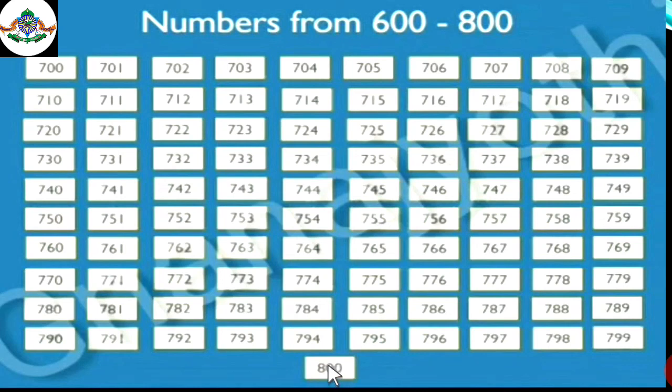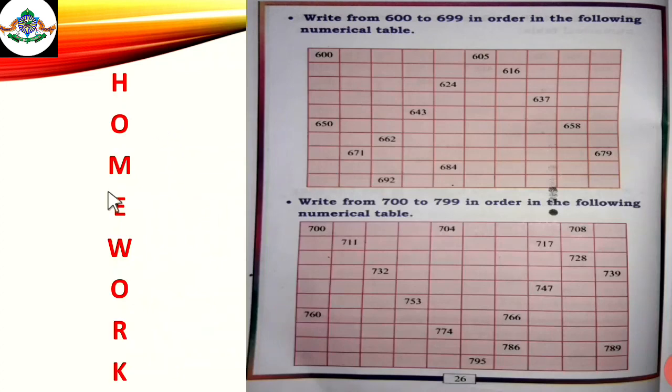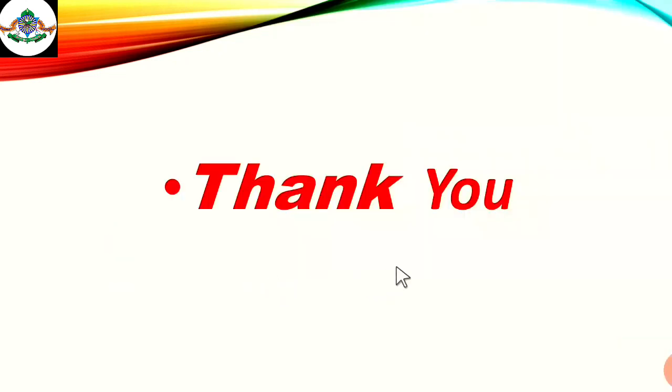OK students, till now we have learnt how to read and write the numbers from 600 to 800. I hope you have all understood. Children, your today's homework is in your textbook on page number 26. There is given tables. In the first table, you have to write the numbers from 600 to 699, and in the second table, you have to write the numbers from 700 to 799. Complete the tables. Okay children, thank you. Jazakallah khair.